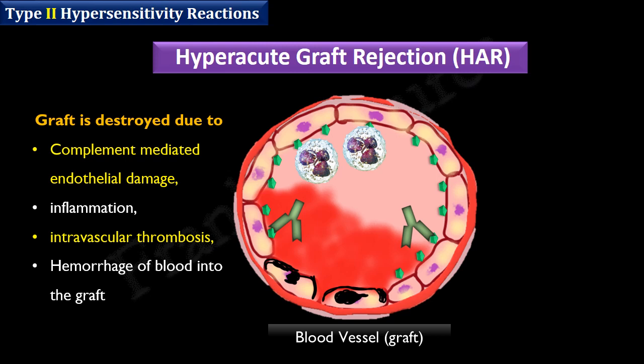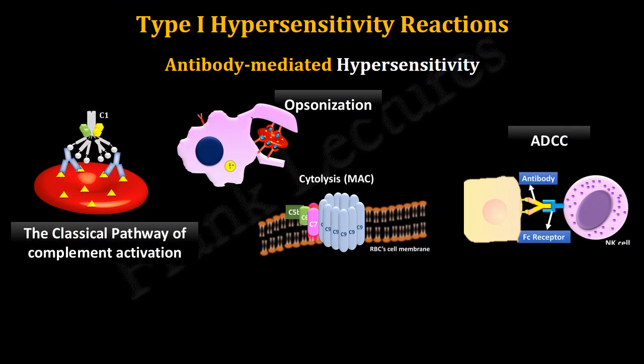In practice, the chances of hyperacute rejection are avoided by predetermining the blood group of both recipient and donor and performing cross-matching. That's all for today's video lecture — please share your opinions and suggestions in the comments below. Thank you for watching.